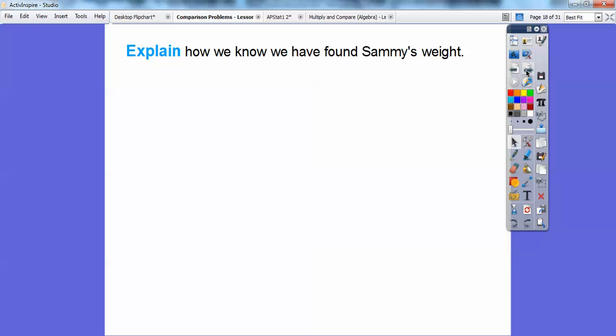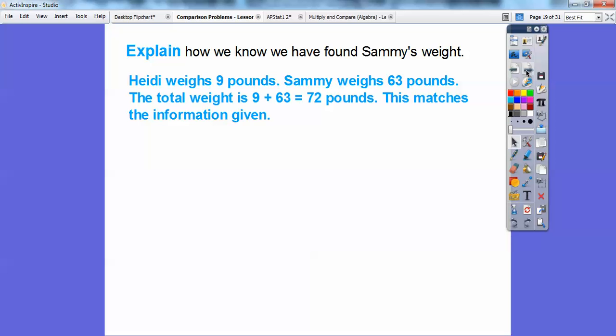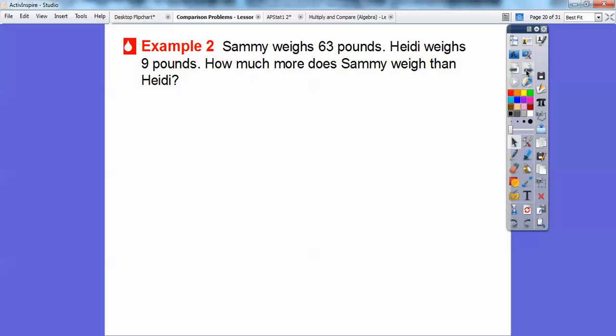We're going to use the same scenario, but ask a different question. So explain how we know that we have found Sammy's weight. Well, the numbers match up. Heidi weighs nine pounds and Sammy weighs 63 pounds, and together they weigh nine plus 63, which is 72 pounds, and that matches the information that they're asking for. So if you see a question like that, you can work backwards and say it just matches your information.